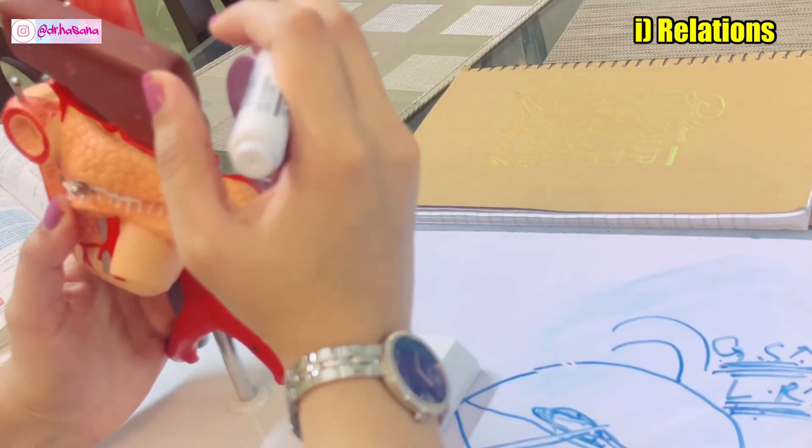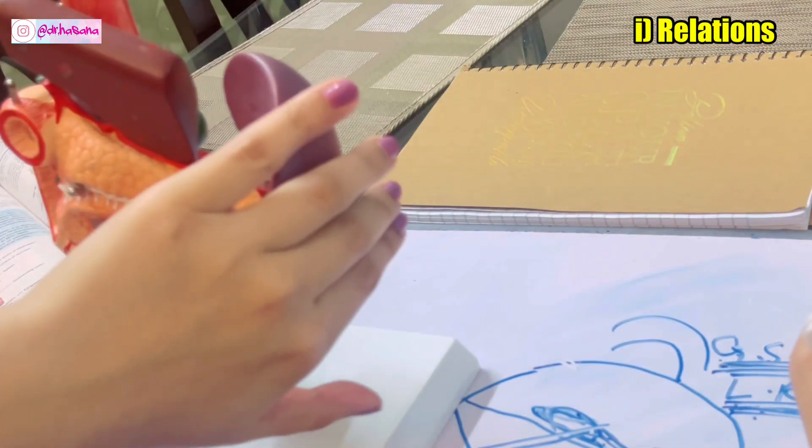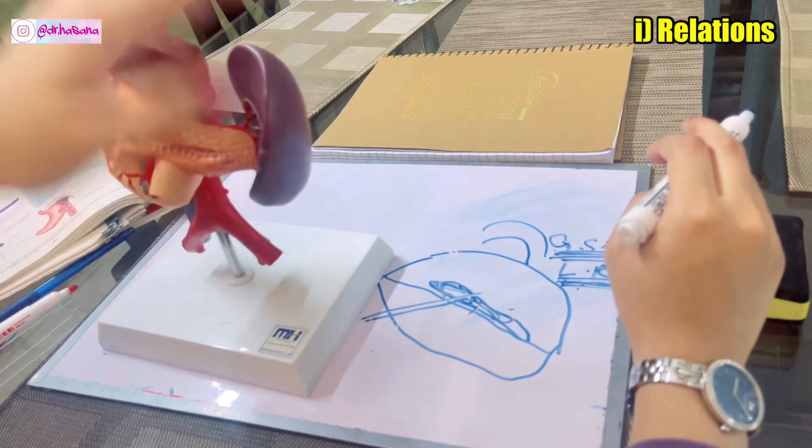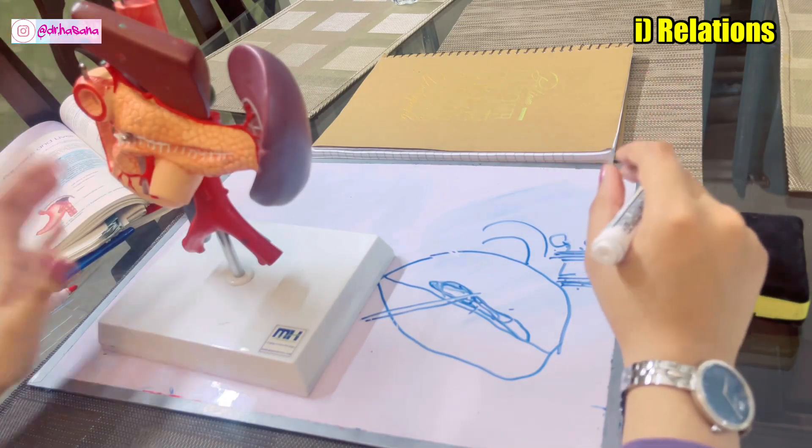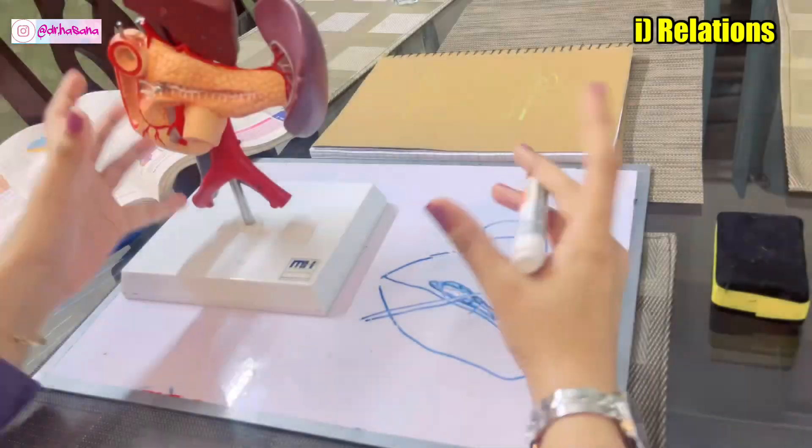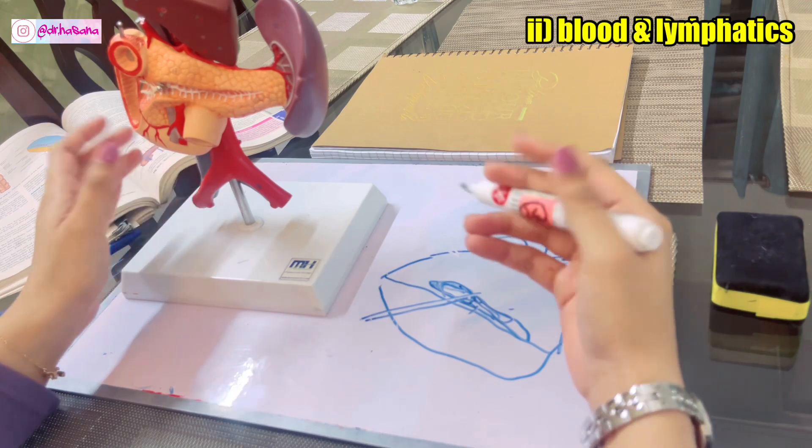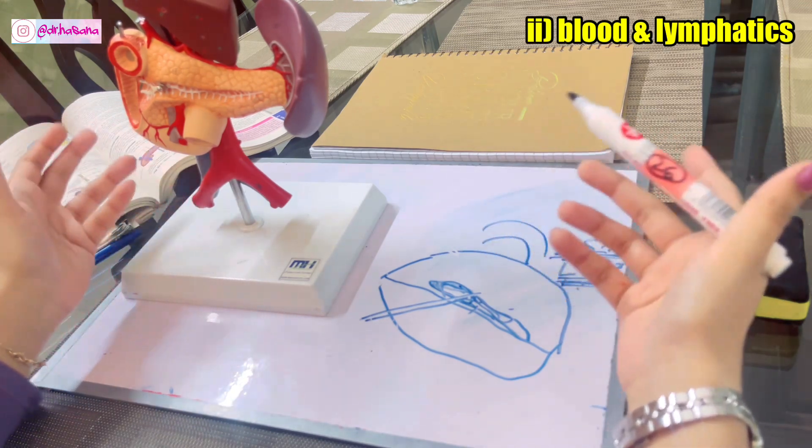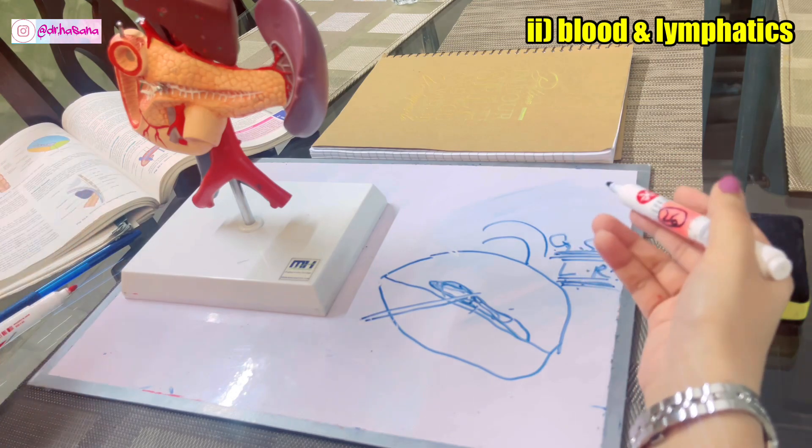Apart from that, the diaphragm is related to the diaphragmatic surface, separating the spleen from the contents of your thorax like the lungs and pleura. The arterial and venous supply is the splenic artery and splenic vein. The pancreatic or splenic nodes drain its lymph.